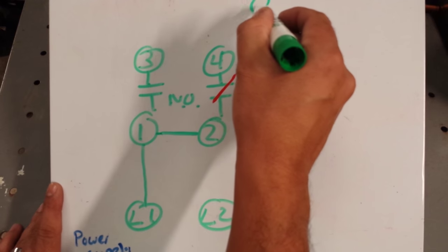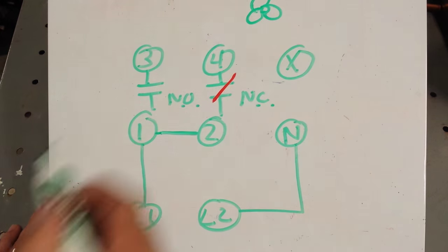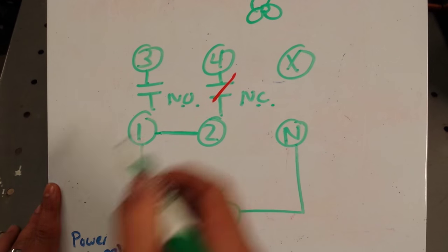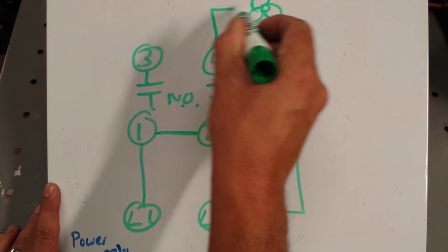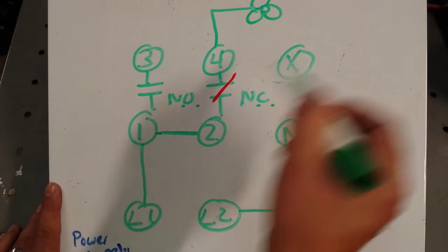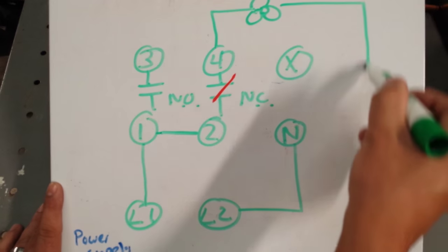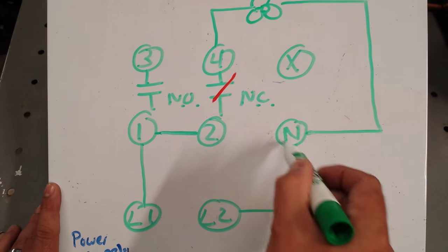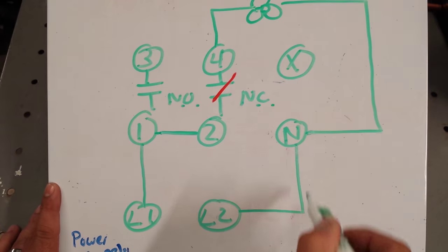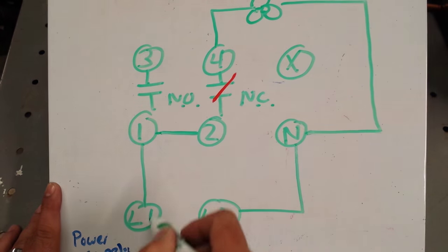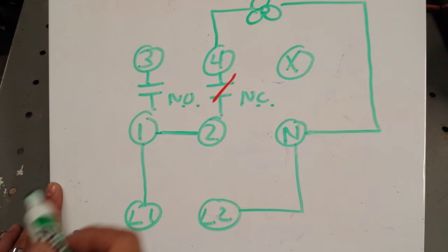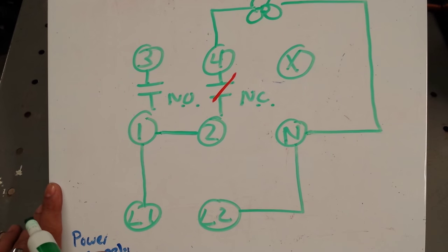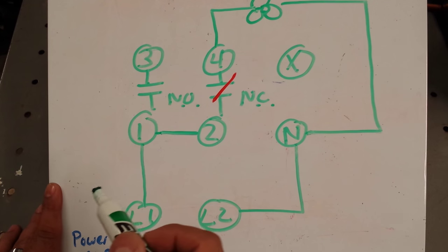So we'll just draw a fan motor picture here to represent our evaporator fan. And we'll put 4 to it there. And if we complete that circuit bringing that fan motor back to L2, L2's in on our defrost clock, that completes the circuit. Which means this fan should be running.